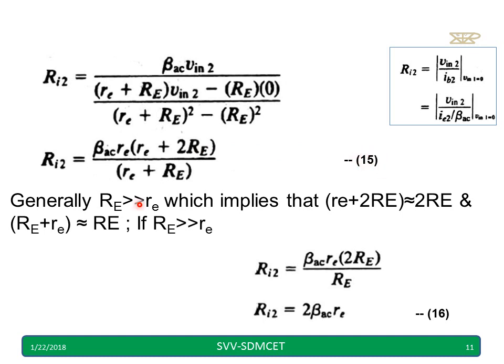Again generally RE is very greater than re, hence RE plus 2re equal to almost 2RE, and RE plus re equal to RE. Hence I rewrite and RE, RE get cancelled. Again ri2 is also equal to 2β_ac re.